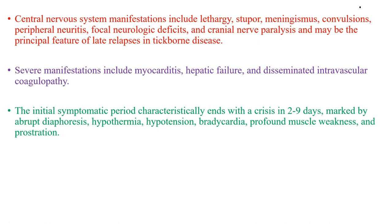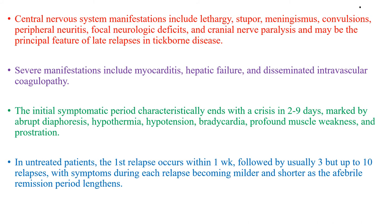The initial symptomatic period characteristically induces a crisis in 2 to 9 days, marked by abrupt diaphoresis, hypothermia, hypotension, bradycardia, profound muscle weakness, and prostration. In untreated patients, the first relapse occurs within one week, followed by usually 3 but up to 10 relapses, with symptoms during each relapse becoming milder and shorter as the afebrile remission period lengthens.